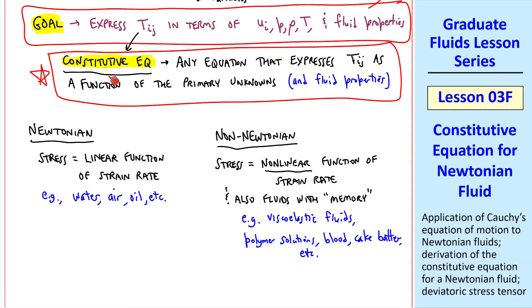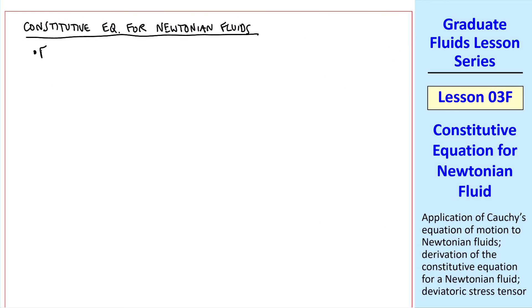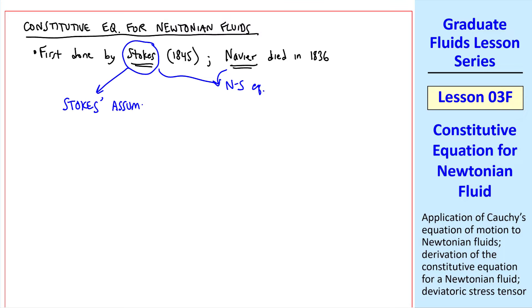So let's derive the constitutive equation for Newtonian fluids. Historically, this was first done by Stokes in 1845. Navier actually died in 1836. But we take what Navier did combined with what Stokes did to form the famous Navier-Stokes equation. Stokes made three assumptions about Newtonian fluids.